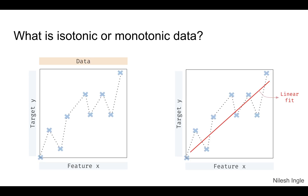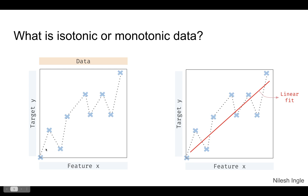Let's say we have a dataset as shown on the left-hand side, where the values for y seem to be increasing with x, but there are fluctuations — the data does go up and down. So the data itself is not monotonic or isotonic, but we can always perform an isotonic regression to get an isotonic fit on this type of data.